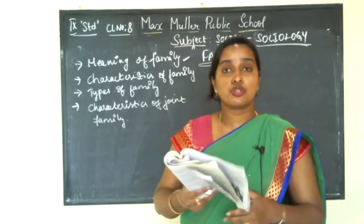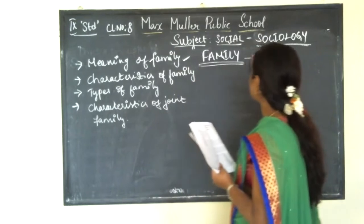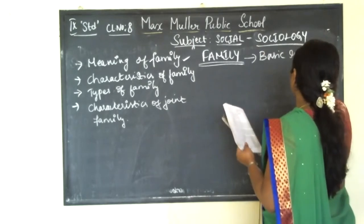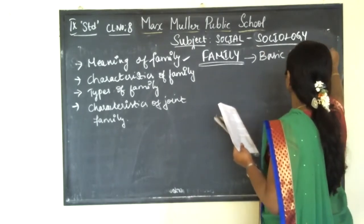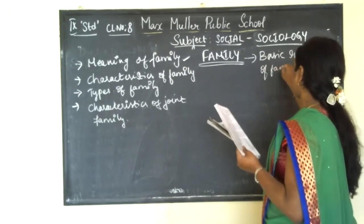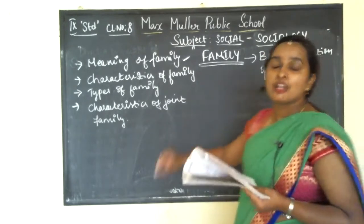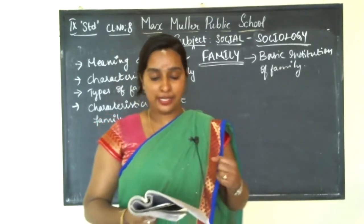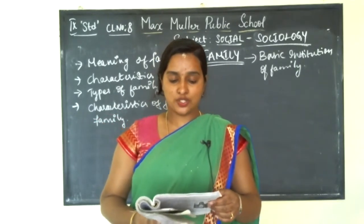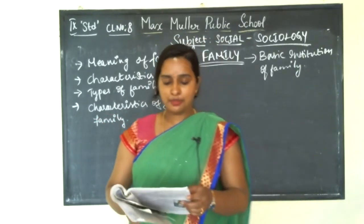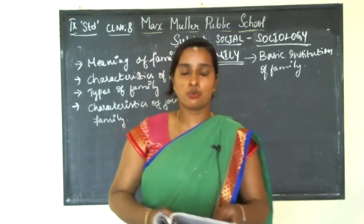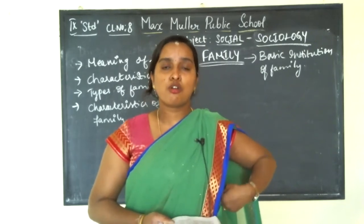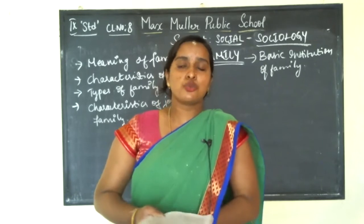Family is called the basic institution of society, where the man provides food, water, shelter, and education for the people who reside in the family. All the activities of society are conducted on the basis of the family, and the members of the family - father, mother, brother, sister - are also members of social institutions.